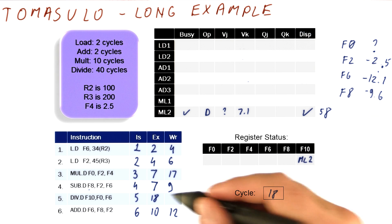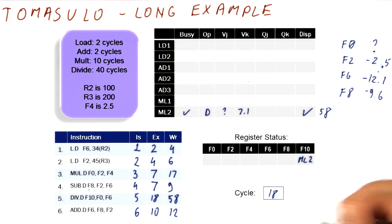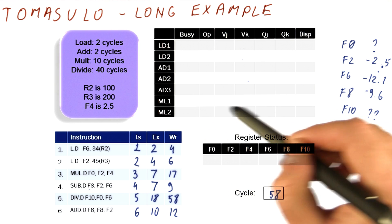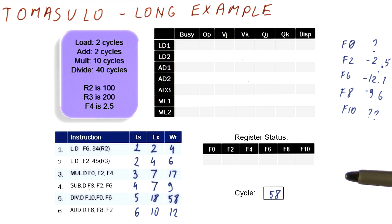So nothing really happens until cycle 58, at which point this value is broadcast. Register F10 gets to grab that value. We un-rename this. We free this reservation station. We look at who is waiting for it, but nobody is. And that concludes our example.